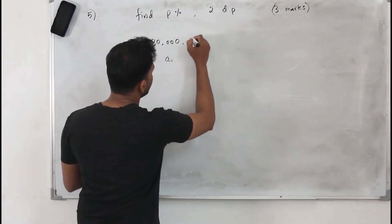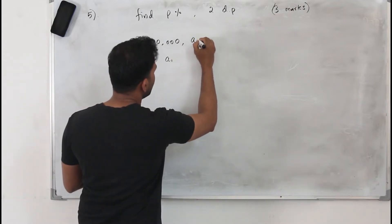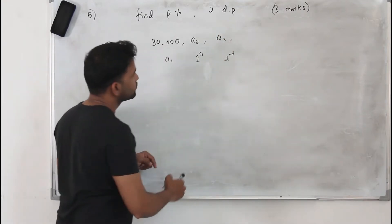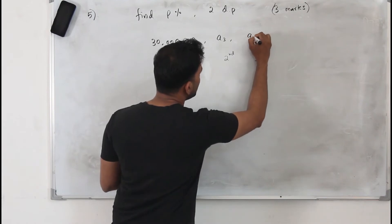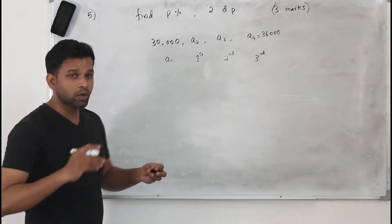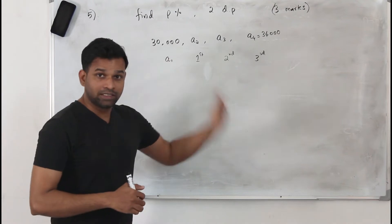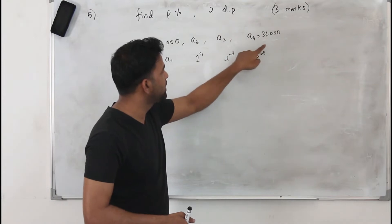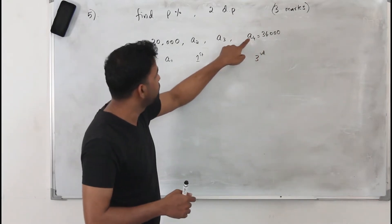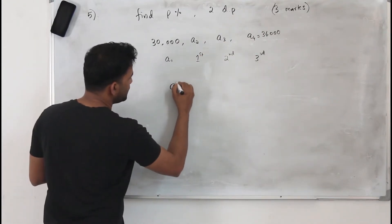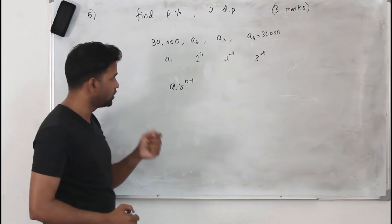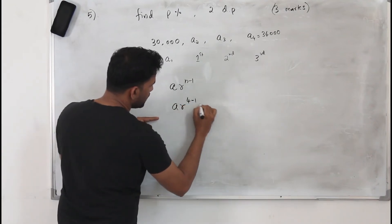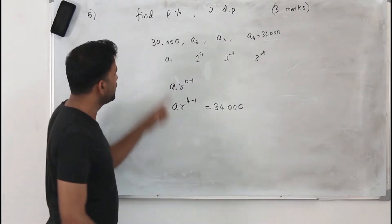After the first year we don't know the total number of bees — take it as A2. After the second year it will be A3. After the third year it will be A4, and A4 is given as 34,000. Read the question carefully: they say after the third year the number of bees is 34,000. Do not take it as the third term — take it as the fourth term, because after the third year it is the fourth term. In a geometric sequence, the nth term is A·R^(n−1). So the fourth term is A·R^(4−1) = 34,000, and first term A = 30,000.